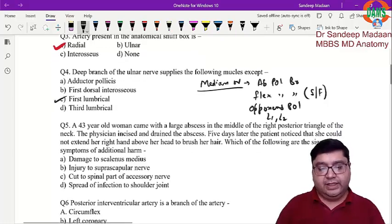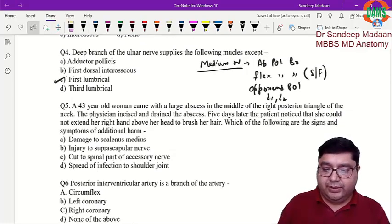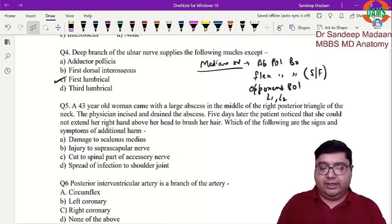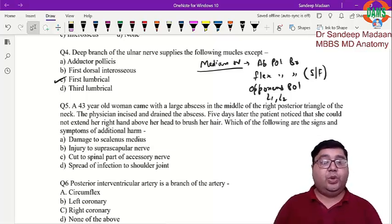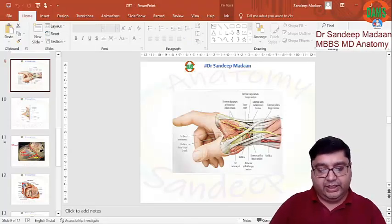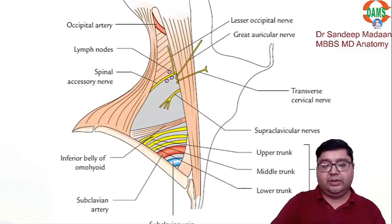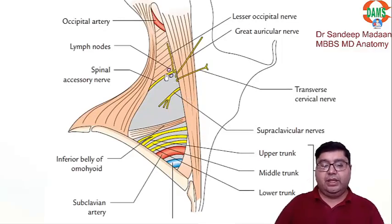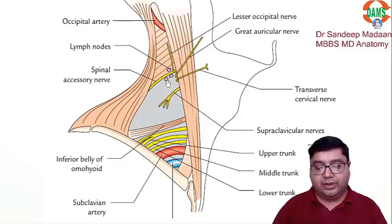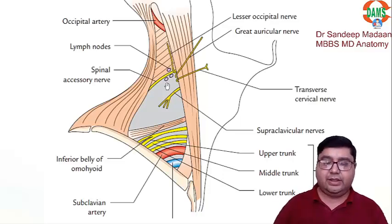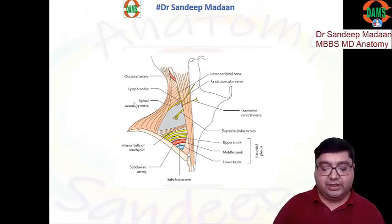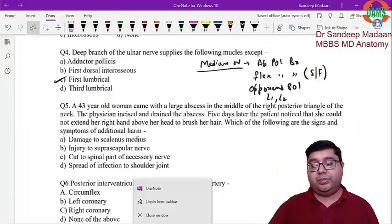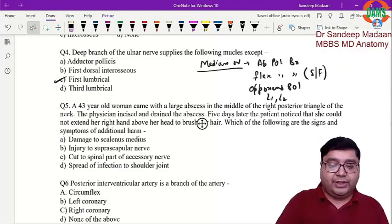Next question: a 43-year-old woman came for abscess drainage in the posterior triangle of the neck; five days later she could not raise her hand above her head. Overhead abduction is done by trapezius plus serratus anterior working together. In the posterior triangle, the spinal accessory nerve is a genuine content — it supplies trapezius and sternocleidomastoid. When the nerve was accidentally cut during drainage, trapezius was paralyzed, explaining the loss of overhead abduction.